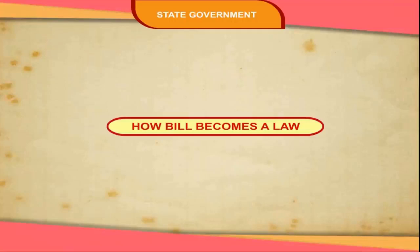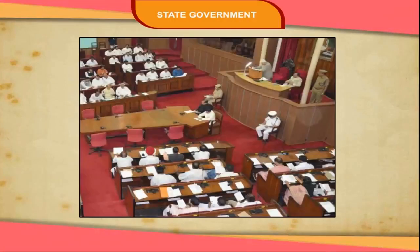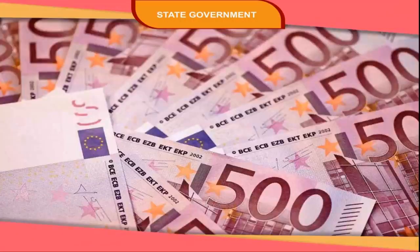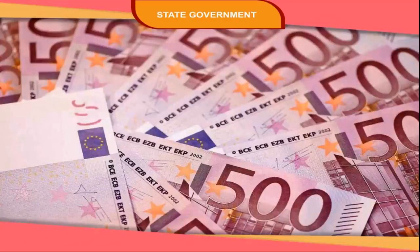How does a bill become a law? A proposal to make a law is called a bill. A bill can be of two types: ordinary bill and money bill. An ordinary bill relates to daily administration, whereas a money bill relates to imposing taxes or spending money from the treasury. An ordinary bill can be introduced in either of the two houses, whereas a money bill can only be introduced in the Legislative Assembly.